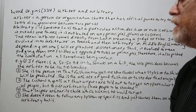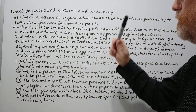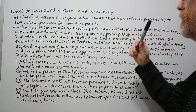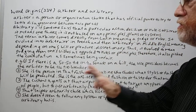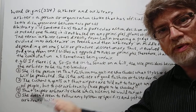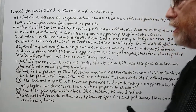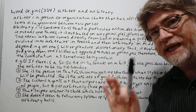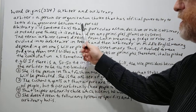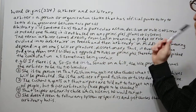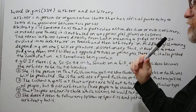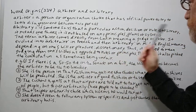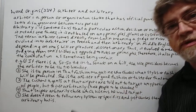First, 'arbiter' is the noun — a person or organization chosen that has the official power to try to settle a disagreement between two parties or two sides. Now the adjective 'arbitrary' is slightly different. If someone says that a particular action, decision, or rule is arbitrary, it means one thinks it is not based on any principles, plans, or systems.